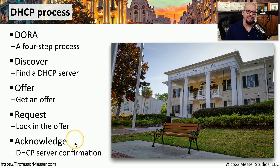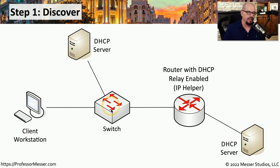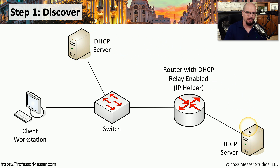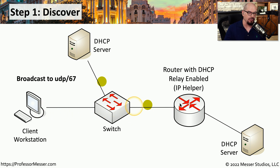Let's look at each of these steps to see exactly how this process occurs on our network. Here's a simple network diagram that includes my client workstation connected to a switch. That switch also has a local DHCP server on my local subnet, and there is a router on my network as well. In step one, the Discover phase, my client workstation sends a broadcast out to the network to UDP port 67, which is sent to all devices on my local network, including the router and the local DHCP server.